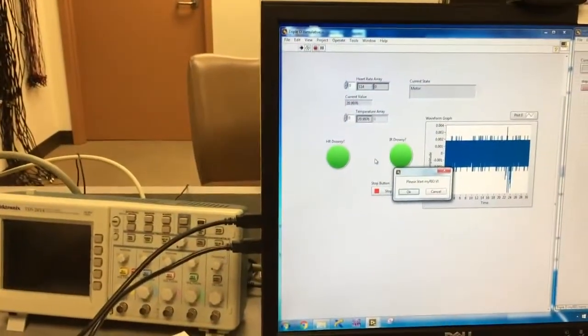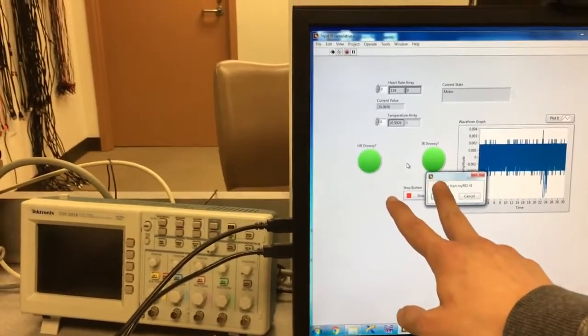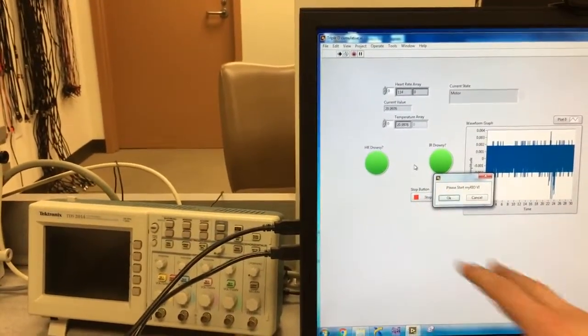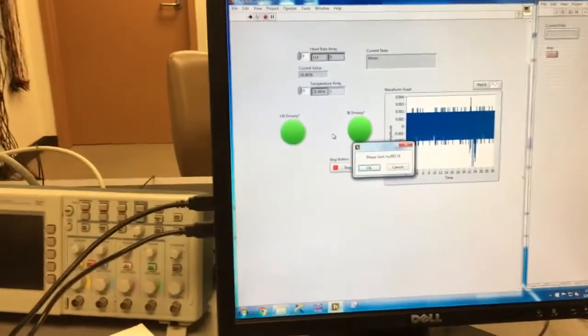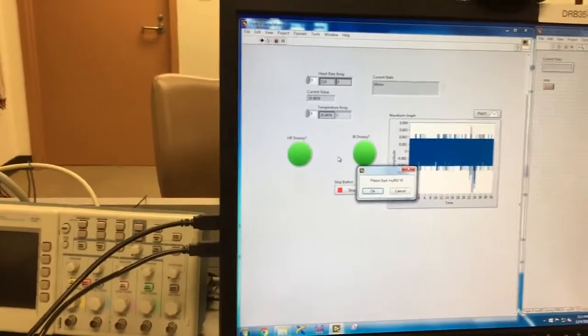As you can see it already detected the temperature drop of over two degrees Fahrenheit and we have two LEDs lighting up signaling that the driver is definitely drowsy since our program uses a two boolean system where both of these have to go off in order to detect a drowsy driver.